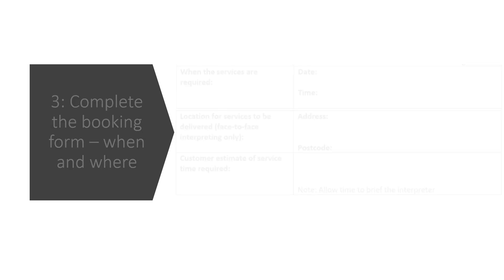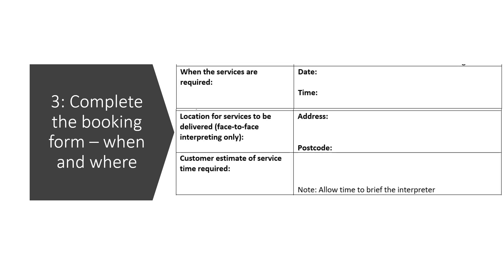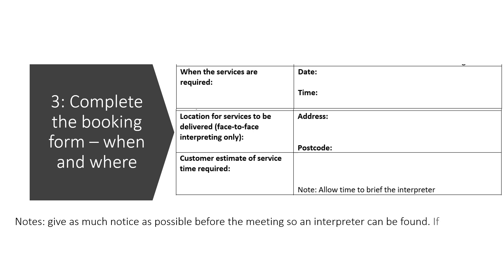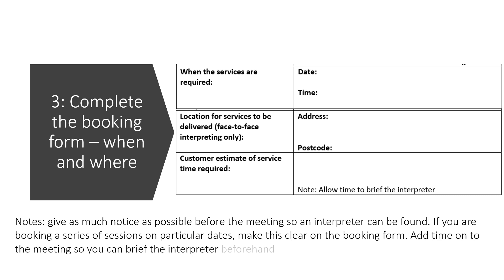Step three, continued — complete the booking form, when and where. Give as much notice as possible before the meeting so an interpreter can be found. If you're booking a series of sessions on particular dates, make this clear on the booking form. Add time onto the meeting so that you can brief the interpreter beforehand on the meeting purpose and content.